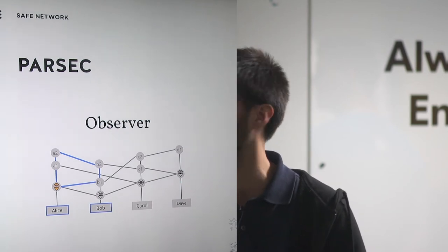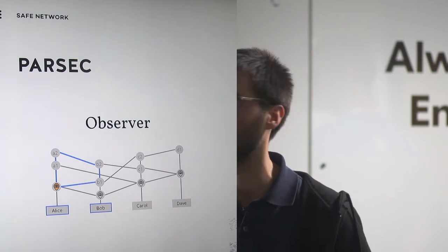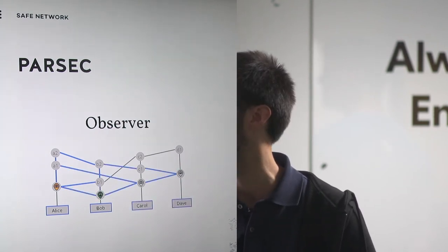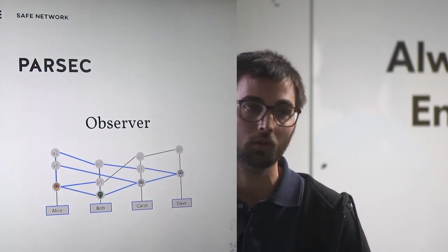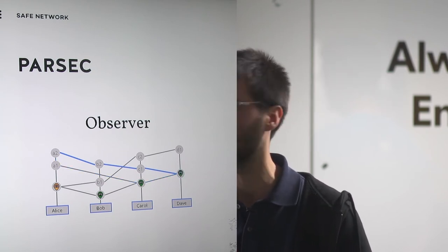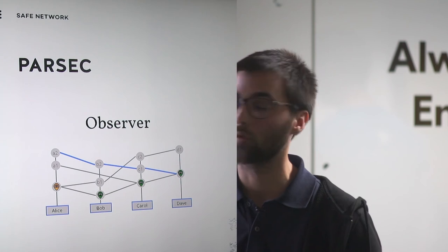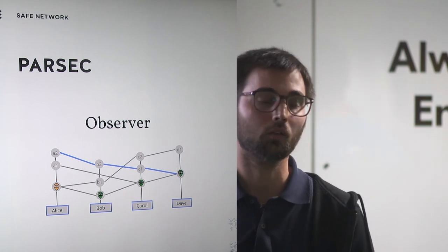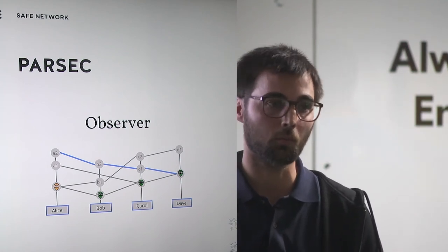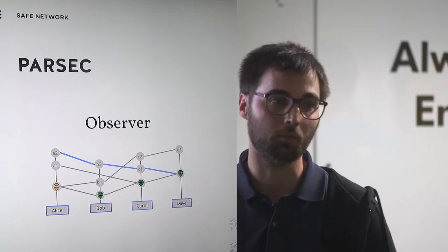We already saw that A2 doesn't strongly see A0, because if you draw the path they only cover Alice and Bob. However, A2 strongly sees B0, A2 strongly sees C0, and A2 strongly sees D0. So A2 strongly sees interesting events created by three different nodes, which is a super majority out of four. In this example, the event A2 is an observer.